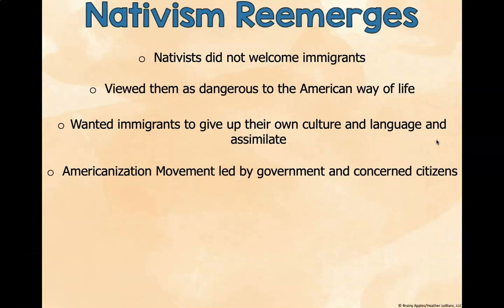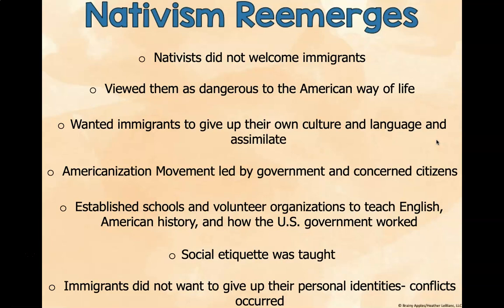Unfortunately, there was also a growth in nativism. Nativists were people already in the United States prior to this massive wave of immigrants. They did not welcome immigrants, viewing them as dangerous to the American way of life. They wanted immigrants to give up their culture and language and assimilate. The Americanization movement, led by the government and concerned citizens, established schools and volunteer organizations to teach immigrants English, American history, and how the U.S. government worked. Social etiquette was also taught. Conflicts occurred because immigrants didn't want to give up their personal identities and culture.